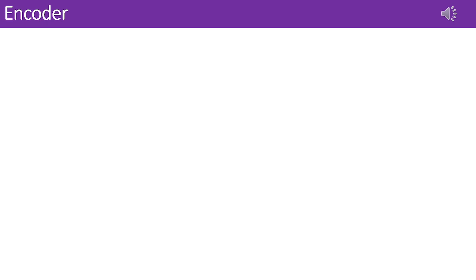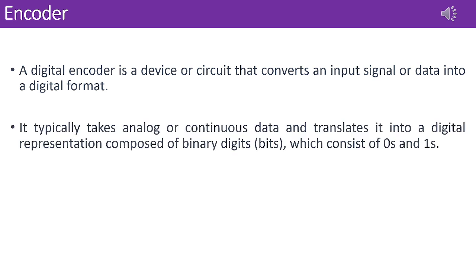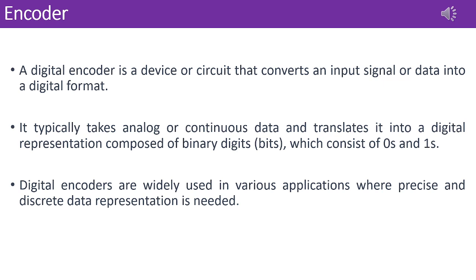A digital encoder is a component or circuit designed to transform an input signal or data into a digital form. It usually converts analog or continuous data into a digital representation made up of binary digits, bits, which are comprised of zeros and ones. Digital encoders find extensive use in a variety of applications that require accurate and discrete data representation.